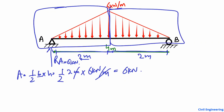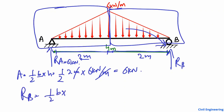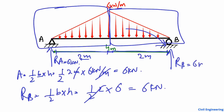Similarly, take the right half-triangle. RB equals half base times height: half times 2 meters times 6 kilonewtons per meter equals 6 kilonewtons. So RB also equals 6 kilonewtons. Both methods confirm the same result.